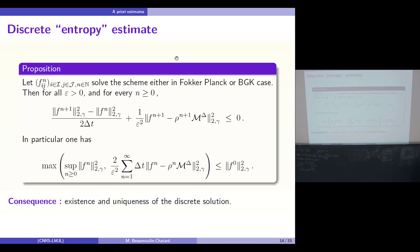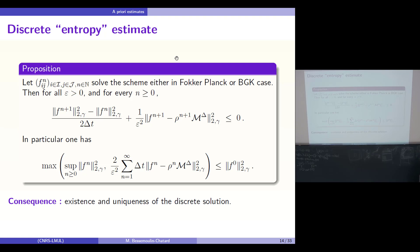Summing this estimate over l, we obtain uniform-in-epsilon a priori estimates: an L-infinity-L2-gamma bound on F, and the L2 norm of the dissipation is controlled by a constant times epsilon squared. From this result we directly obtain well-posedness of the scheme — the L2 energy estimate gives uniqueness of the discrete solution, and since it is a finite-dimensional linear system, we also get existence.